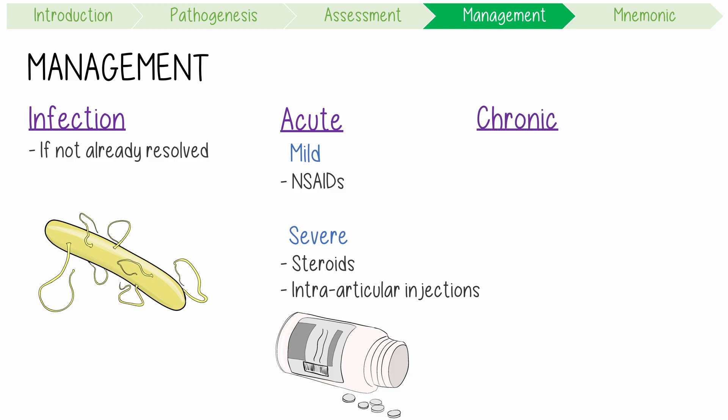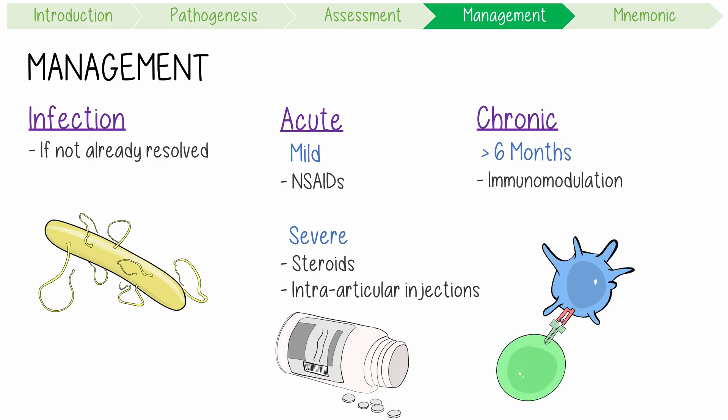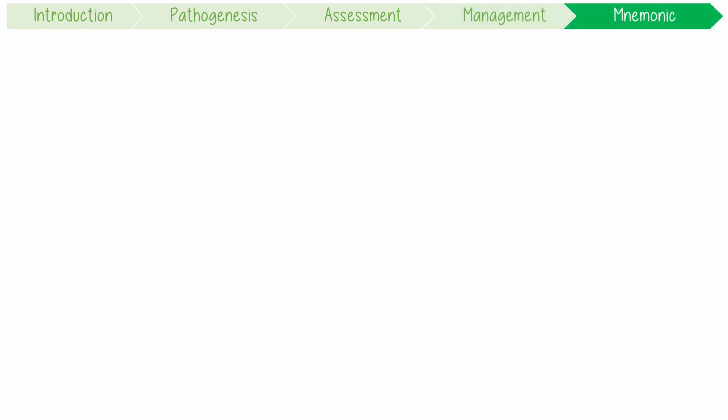Chronic arthritis — i.e., arthritis that occurs for more than six months — may require immunomodulation with DMARDs like sulfasalazine or biologics.